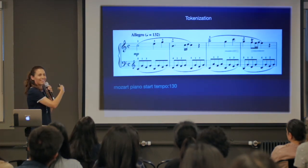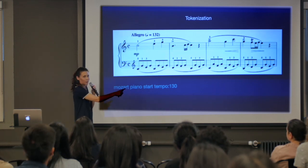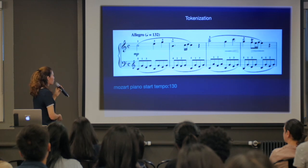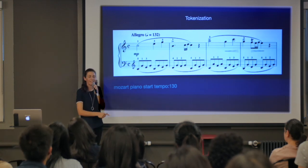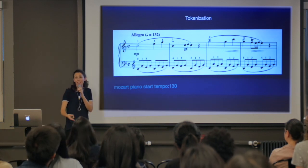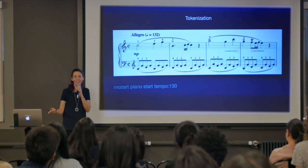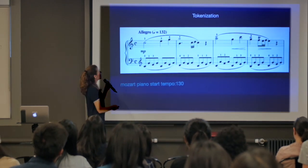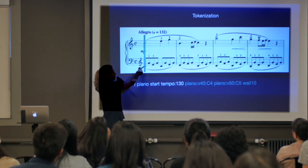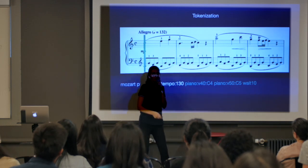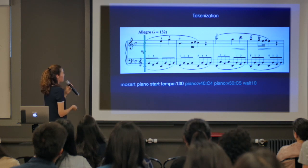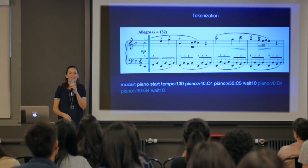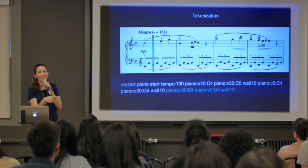Now we have the problem of how do you translate music into a sequence of tokens the model can work with. The system I'm using is very similar to how MIDI itself works. The model will always see a series of initial tokens: the composer or band who wrote the piece, the instrument or set of instruments, a start token, and a tempo. Then as the piece begins, we have a symbol for each note turning on with a certain volume, followed by a token saying to wait a certain amount of time. Volume zero means a note just turned off, and the next note turns on, and then we wait again.